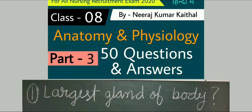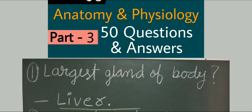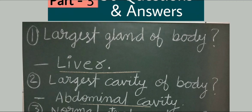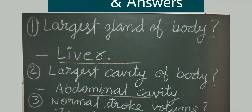First question: largest gland of our body. Liver. Liver is the largest gland of our body. Next question: largest cavity of our body. Abdominal cavity is the largest cavity of the human body.